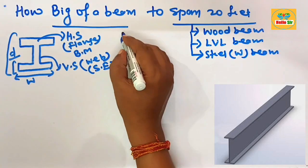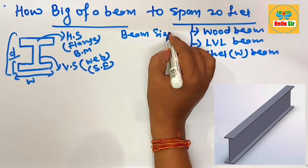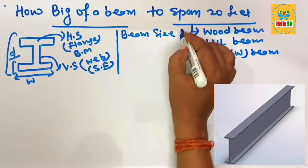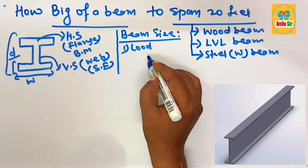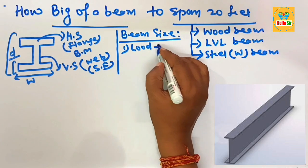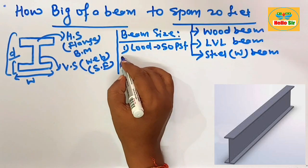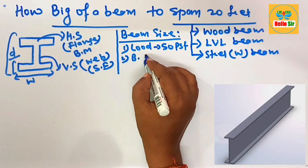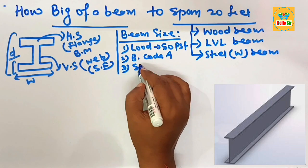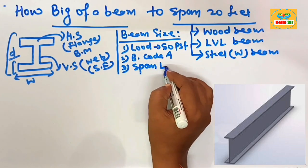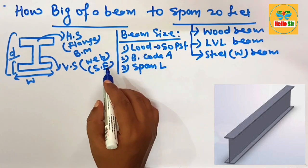Beam size depends on several factors. The first factor is the total load — about 50 pounds per square foot, consisting of dead load and live load. Second is the building code in your area. Third is the span length and grade of material used to make the beam structure.